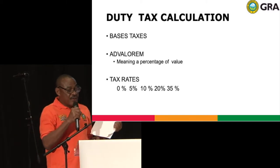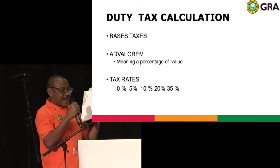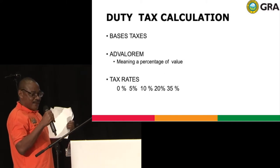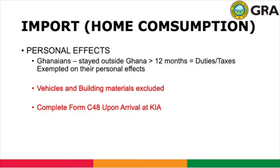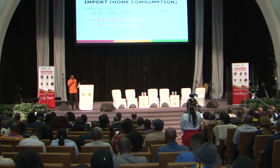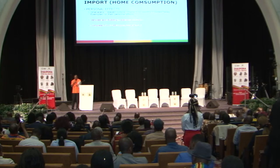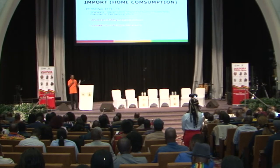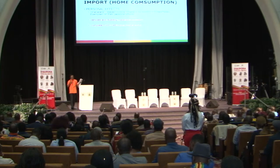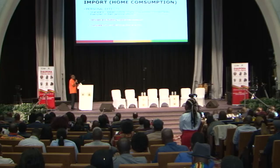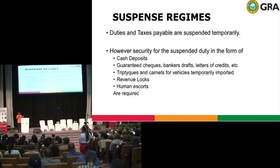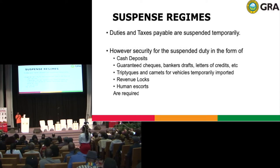For customs worldwide, tax is based on a particular value. For Ghana, we use the ad valorem, meaning it is a percentage of the total value of that particular item. For Ghana law, the value of an item is the cost plus insurance and freight — so we call it CIF. The cost could be an FOB (free on board) or ex-works, which are international trade terms known as Incoterms. For customs all over the world, there are six methods of calculating duty based on the value.